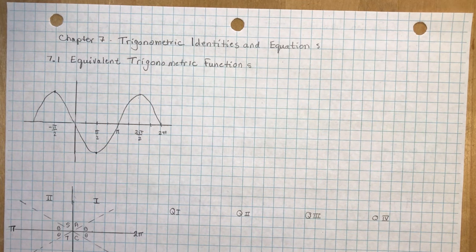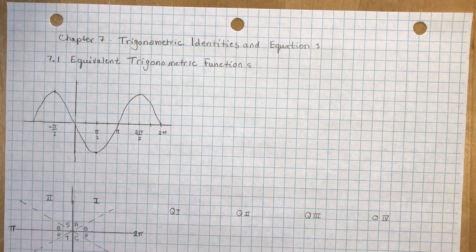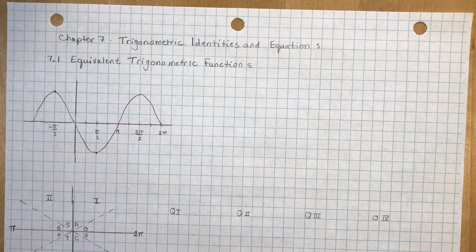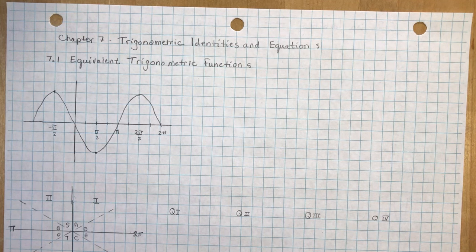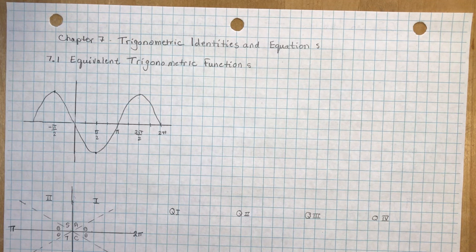We've made it to chapter 7 now — Trigonometric Identities and Equations — and today we're going to talk about equivalent trigonometric functions. Chapter 7, I have to warn you right now, this is always the chapter that students find the most difficult, so spend the time to figure it out. It's not impossible, nothing is, and I'm sure you can all do it if you just follow along.